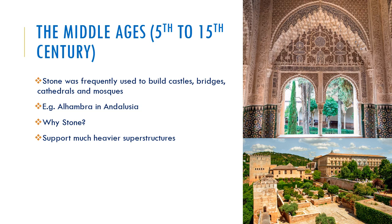Moving forward in time to the Middle Ages — the 5th to 15th century — stone was the most frequently used building unit for masonry structures, and it was used to build castles, bridges, cathedrals, and mosques. You can see an example of Alhambra in Andalusia, and the amount of architecture achievable through these individual unit blocks is just amazing. The structures built in the Middle Ages used stone as their masonry units because it was able to support heavier superstructures.